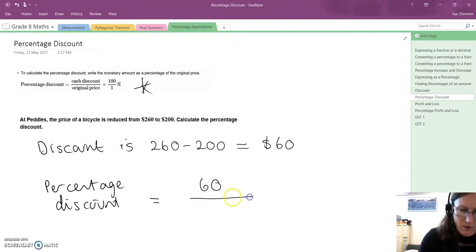$60, the original price of the bike on the bottom, $260, and then to change it to a percentage as per normal, times it by 100 over 1.